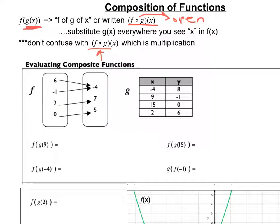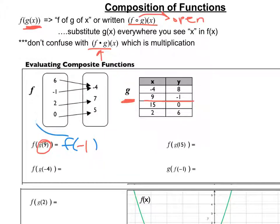When I look at this first one, I want to look at the inside function. My inside function is g of 9. So I look at g and find where 9 is in my table — what do I get when I have a value of 9 in g? I get out negative 1. So f of g of 9 means I now look in f for negative 1, and it goes to negative 4. Next, g of negative 4 equals 8.